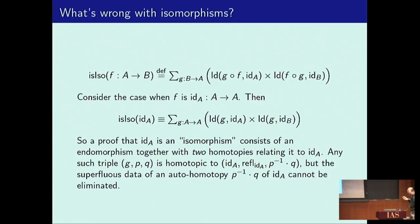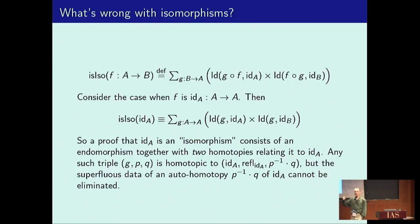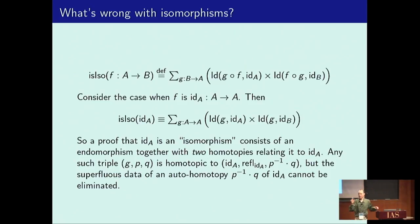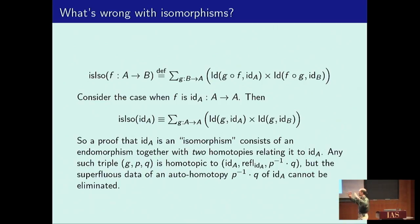If we restrict to the case where F is the identity map on a type A, then G composed with F is just G, and F composed with G is also just G when F is the identity map. So the data here is an endomorphism of A together with two homotopies relating it to the identity map. If you think about that homotopically or categorically, you've got the identity map as a base point, then G which is another map, and two paths relating them — together those form a loop.